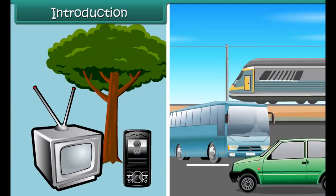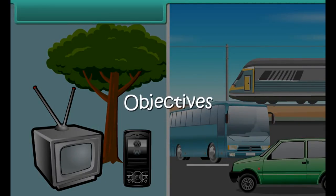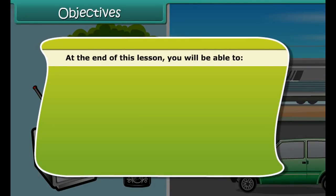Look around yourself and you will find objects of different kinds such as television, mobile, trees, cars, buses, trains etc. Objects such as television, mobile, trees etc. are static. In other words, their position does not change with time. Such objects are said to be at rest, whereas objects such as cars, buses, trains etc. are non-static. It means that their position changes with time. Such objects are said to be in motion.